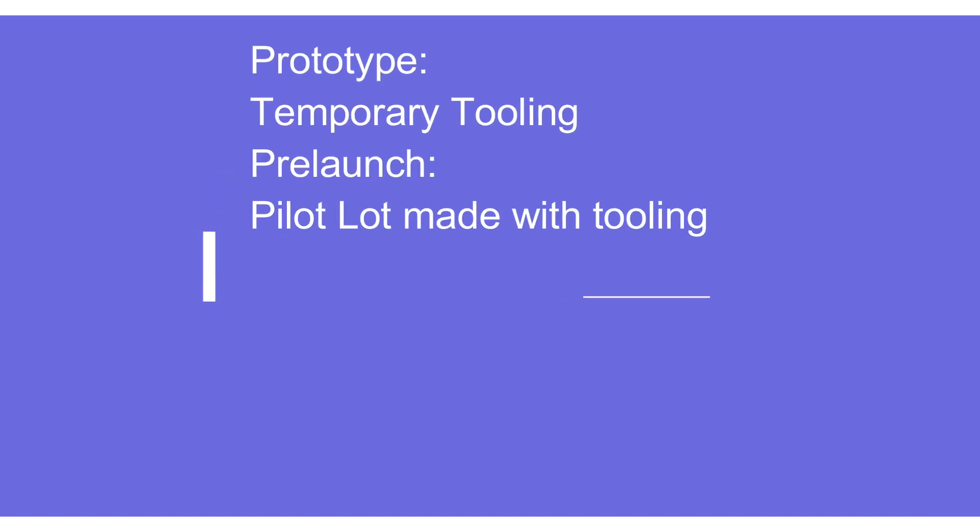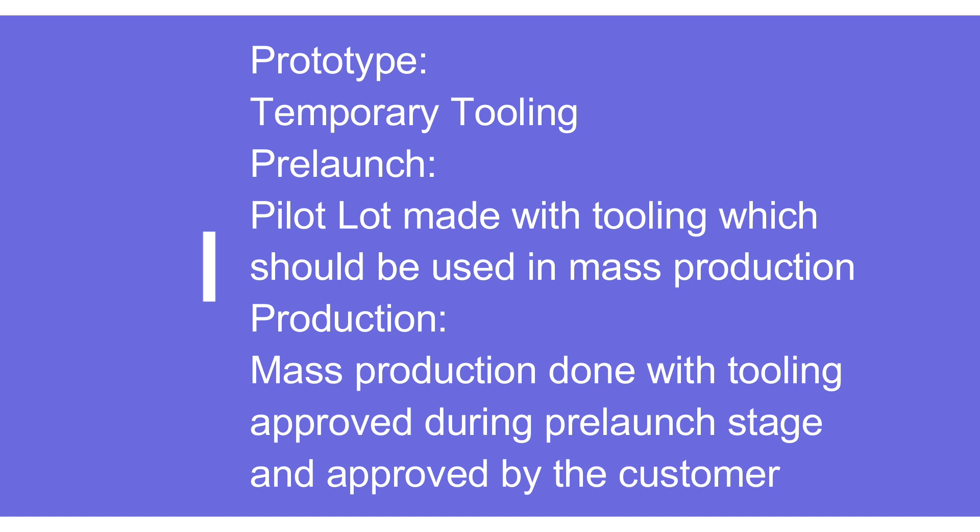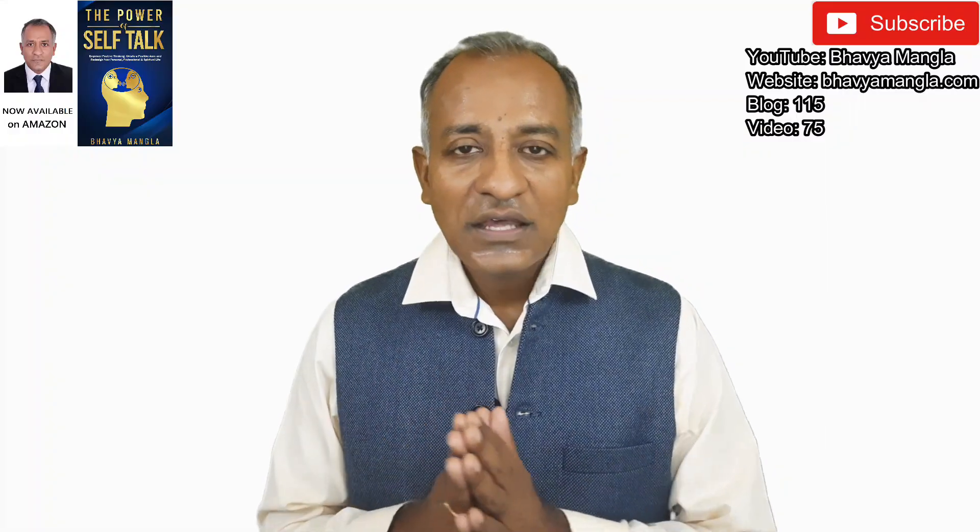The prototype control plan is generally made with temporary tooling. The pre-launch control plan is made with broadly the tooling that is going to be used in mass production, though there can be some changes. The production control plan assumes that whatever tooling, fixtures, and gauges are there will be used regularly in mass production as well.